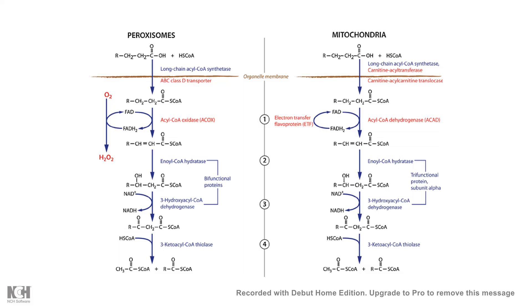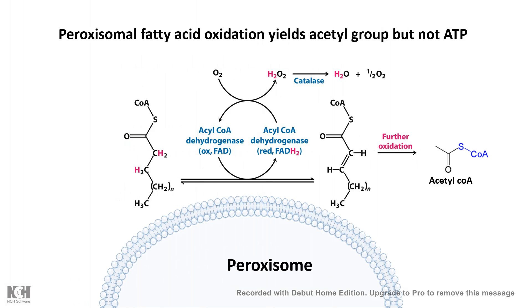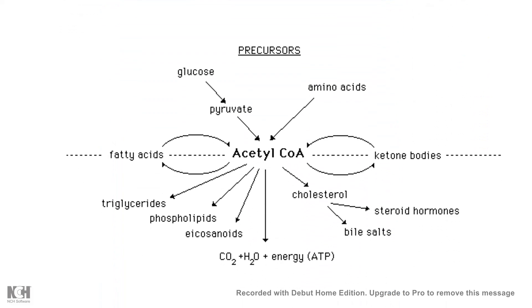The main function of the peroxisome is the breakdown and oxidation of long-chain fatty acids. Just like mitochondria, fatty acid oxidation also takes place in the peroxisome, but there is a basic difference: in the peroxisome, acetyl-CoA is produced, but this process does not yield ATP as it does in mitochondrial beta-oxidation. However, the acetyl-CoA produced is an important recycled product, because acetyl-CoA is at the center of many catabolic and anabolic pathways — from ketone body production to fatty acid production, cholesterol biosynthesis to phospholipid biosynthesis — and it can be used by the cell to produce several other metabolic products.